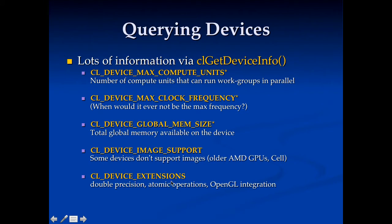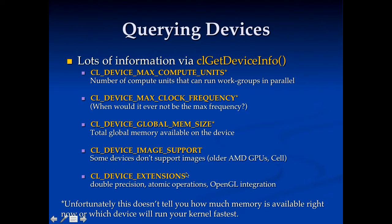You can also look up device extensions. There are all sorts of things: double precision, atomic operations, vendor-specific ones. For example, AMD has a C++ extension to OpenCL, and you can find out about that by looking at device extensions. Now there's a caveat here — these things don't necessarily tell you what you want to know. The number of max compute units, if you compare two GPUs, doesn't necessarily mean one will be faster than the other, since they could be very different sorts of GPUs.